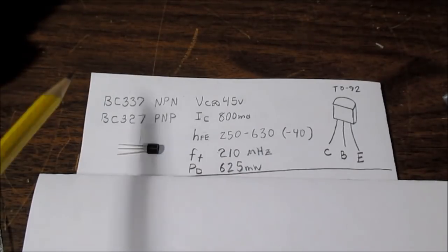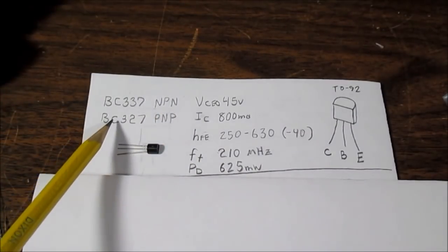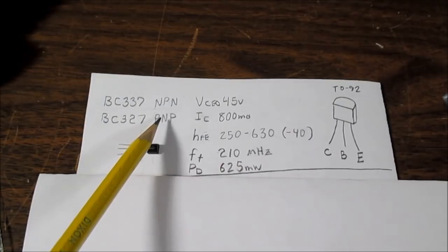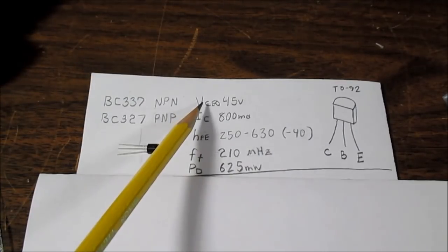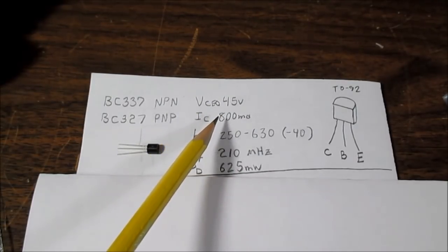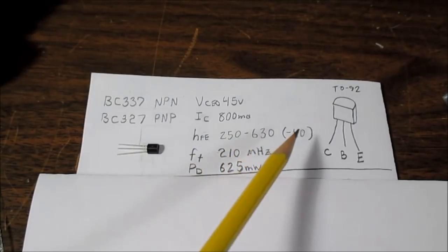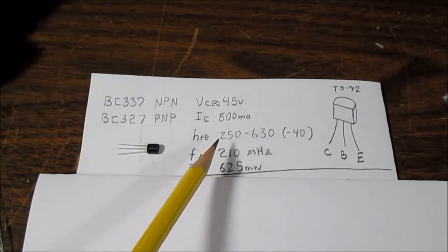The first transistor is the BC337 in the NPN polarity, or its complement the BC327 in PNP polarity. I have some of the parameters written down here. But if you want any more information, want to see the curves and things like that, the graphs and all that good stuff, just put the part number into your Googler and find the datasheet. The collector to emitter voltage is 45 volts maximum. Collector current 800 milliamps. The gain of the 40 suffix part is 250 to 630. That's a very nice high gain by the way.